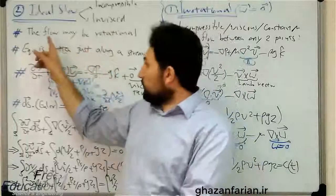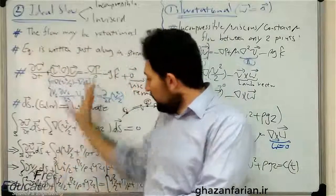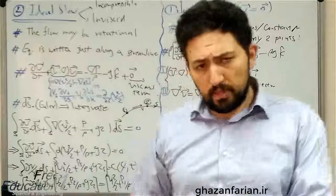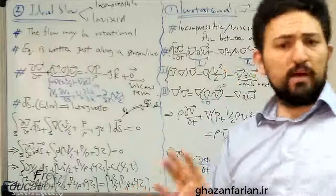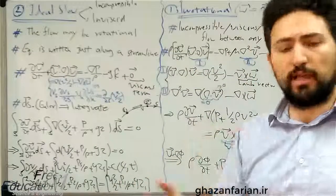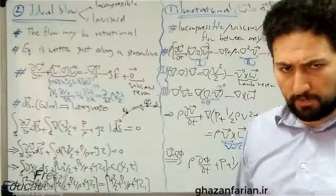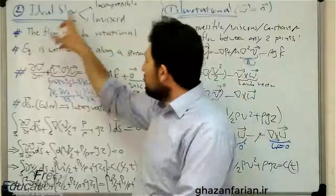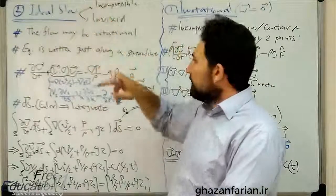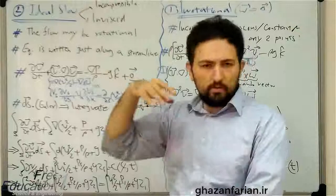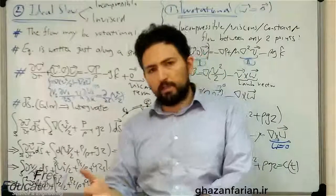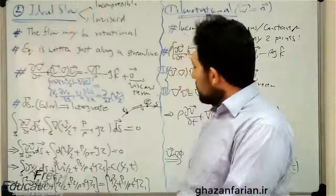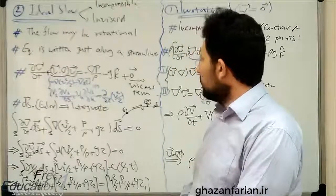During the derivation of this version of Bernoulli's equation, I won't speak about the vorticity vector or the rotationality or irrotationality of the flow. So the flow needs to be ideal — incompressible and inviscid — but the flow can be rotational.